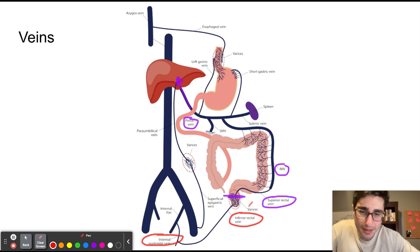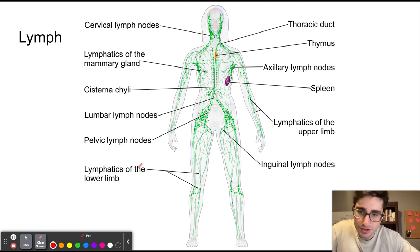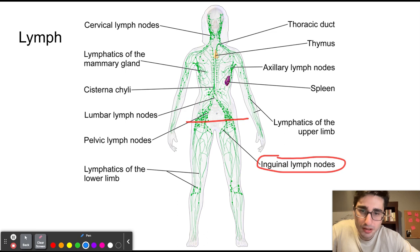The area below the pectinal line drains directly into the heart via the IVC, whereas the area above drains into the liver. Now for lymph drainage: the area below the pectinal line drains into the superficial inguinal lymph nodes, which makes sense given its proximity to them. Above the pectinal line, lymph drains into the internal iliac nodes, which are part of the pelvic lymph nodes.